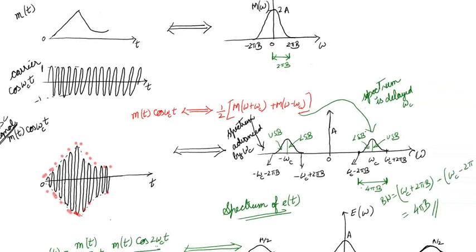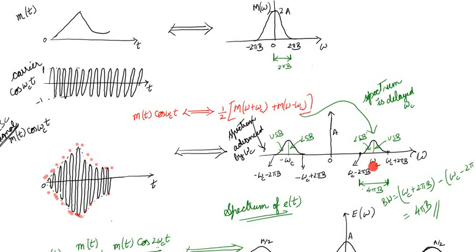Why is it called Double Sideband? Looking at the spectrum located around ωc: the frequency components above ωc are called the Upper Sideband, and the components below ωc are called the Lower Sideband. Similarly for negative frequencies: below −ωc is the Lower Sideband and above −ωc is the Upper Sideband. The spectrum clearly has both Upper Sideband and Lower Sideband — that is why it is called Double Sideband — and there is no separate spectral component at ωc, so it is called Suppressed Carrier.